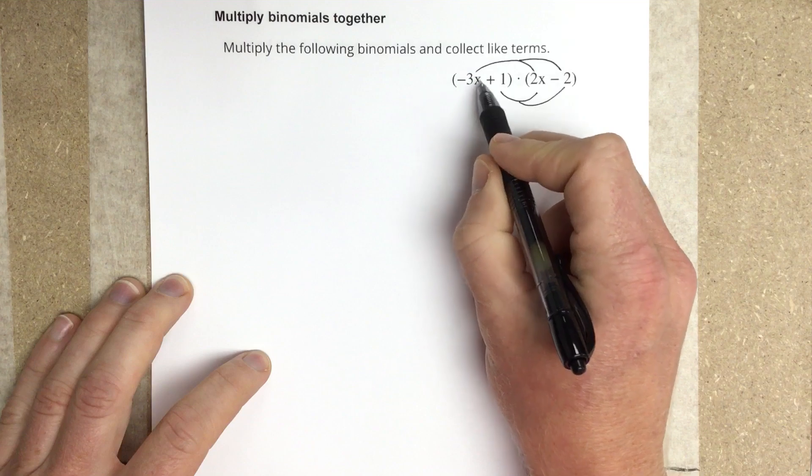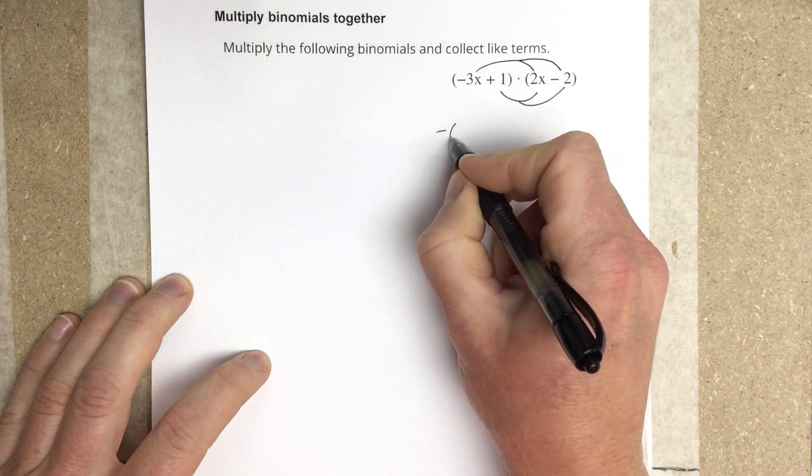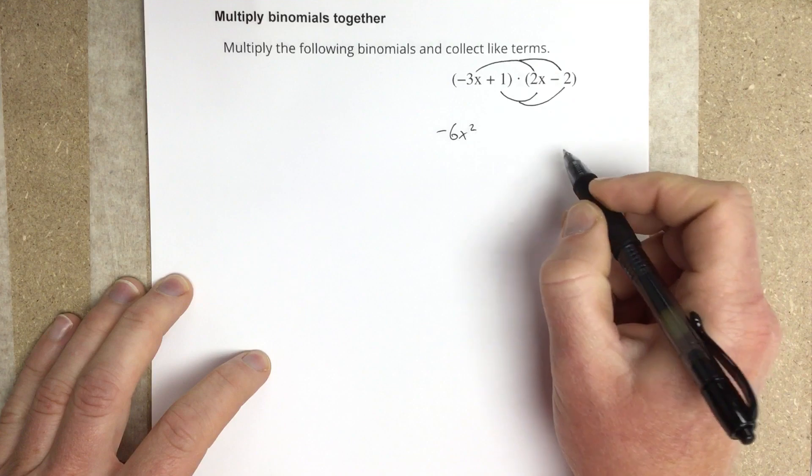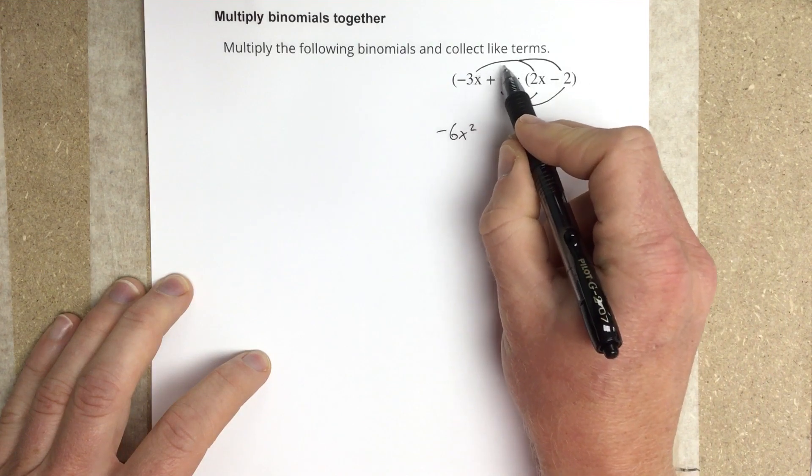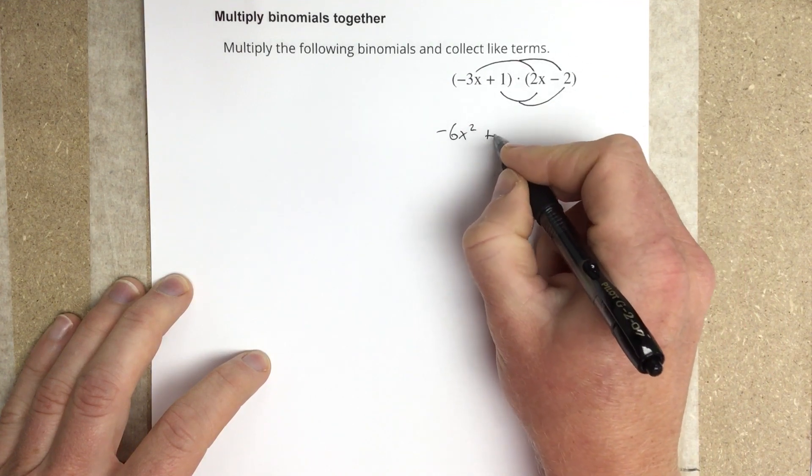So we're going to start with negative 3x, multiply it times the 2x, and I get negative 6x squared. And then negative 3x times the negative 2 will be positive 6x.